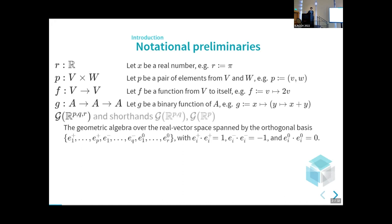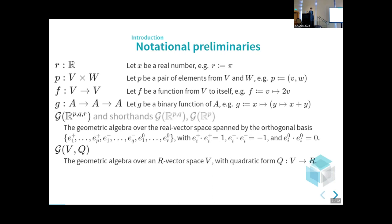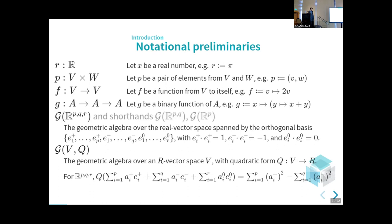Moving on to more familiar notation, I'm going to use curly G with reals to PQR for geometric algebra. When I write this, I'm talking about the geometric algebra over the real vector space spanned by the standard positive, negative, and null basis vectors. But actually this isn't really what I want to talk about — I don't want to limit myself to these real geometric algebras. I want to talk about the general case where I have a geometric algebra over a vector space V parameterized by a quadratic form Q, where Q sends elements of the vector space to elements of the field or ring. In our standard RPQR, the quadratic form is implemented by summing the squares of all the positive coefficients and subtracting the squares of all negative coefficients.